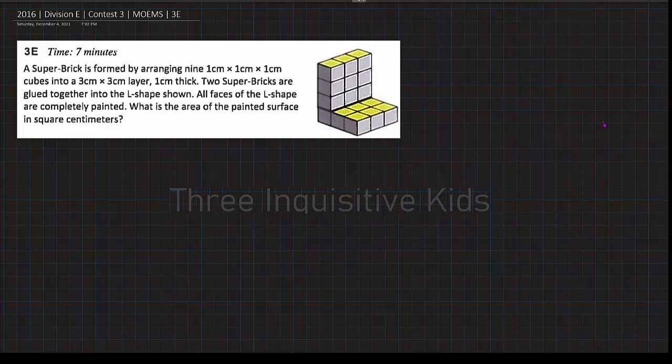A super brick is formed by arranging nine 1 cm x 1 cm x 1 cm cubes into a 3 x 3 cm layer, 1 cm thick. Two super bricks are glued together into the L shape, as shown right here. All faces of the L shape are completely painted, so that also includes the bottom. What is the area of the painted surface in square centimeters?